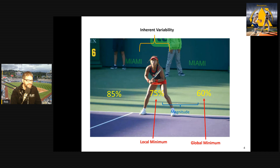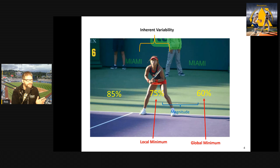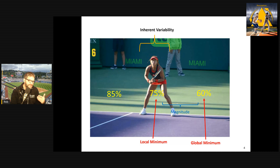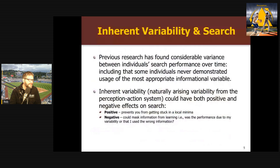Pacheco and Newell look at some factors that could affect getting stuck in a local minimum and the search process. A couple of things they look at: first, the magnitude of the difference between the local and global minimum. If there's a huge difference, you would think you'd notice it — so if I serve at the body and then accidentally serve to the backhand and get way better performance, I should notice that and continue searching. Also, they look at the issue of inherent variability — the idea that people differ in their basic ability to reproduce the same movement.